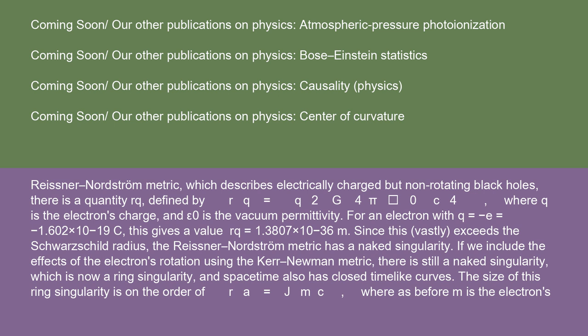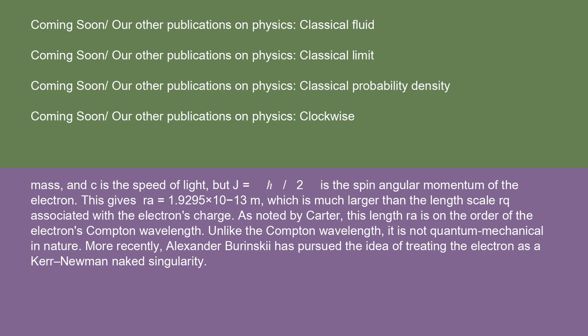The size of this ring singularity is on the order of RA = J/(Mc), where M is the electron's mass, and c is the speed of light, but J = ℏ/2 is the spin angular momentum of the electron. This gives RA = 1.9295 × 10⁻¹³ m, which is much larger than the length scale RQ associated with the electron's charge.